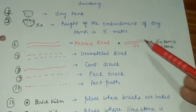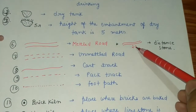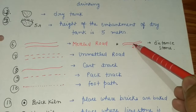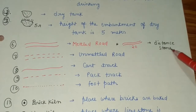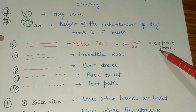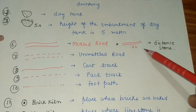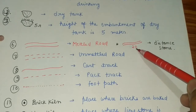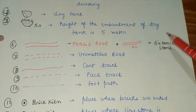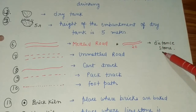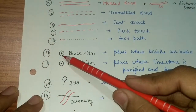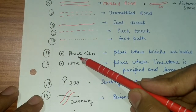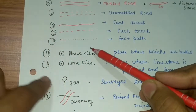If a number like 20, 30, or 22 is written near the metal road, it represents a distance stone or milestone. Many questions in exams ask what such numbers represent — the answer is distance stone or milestone.